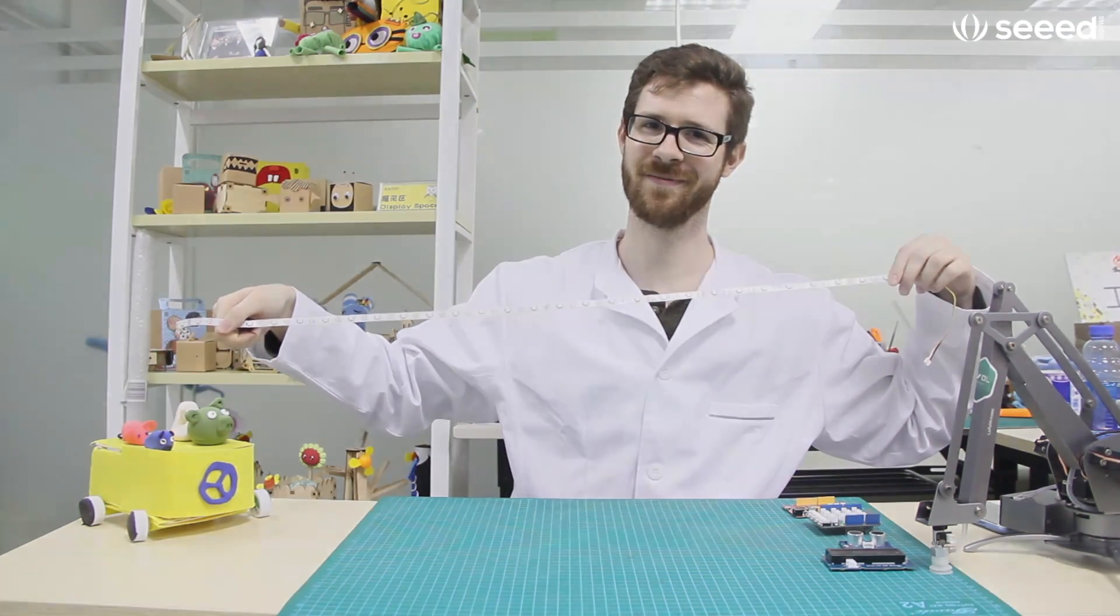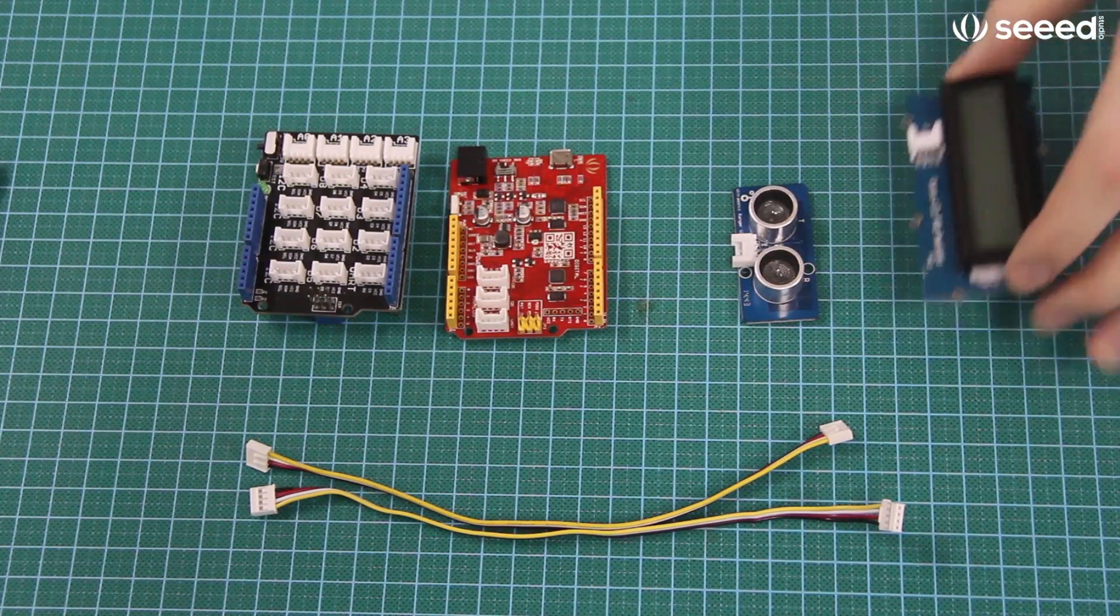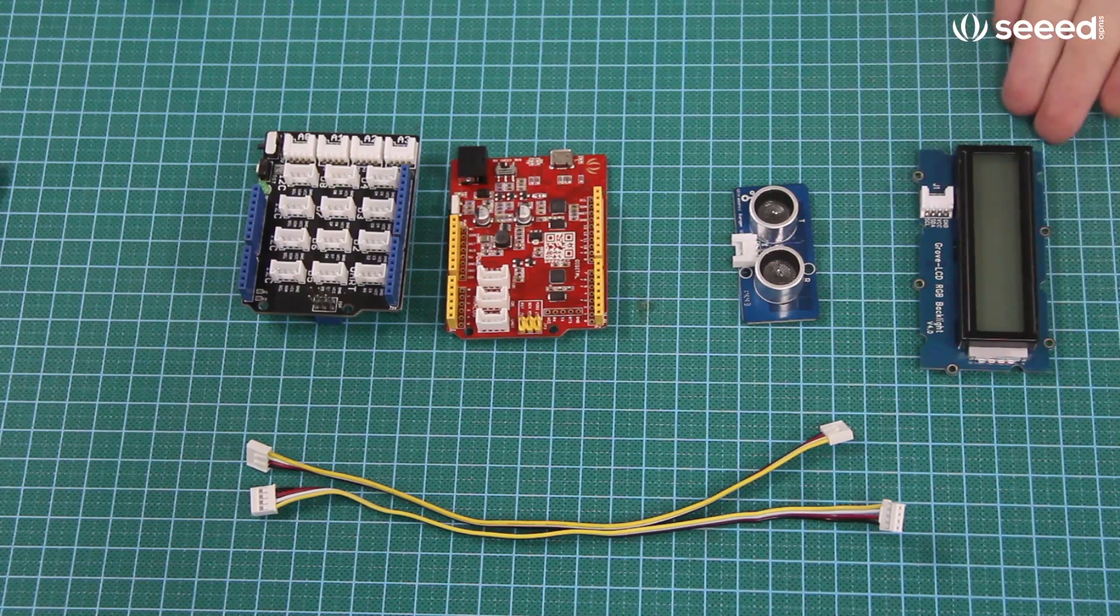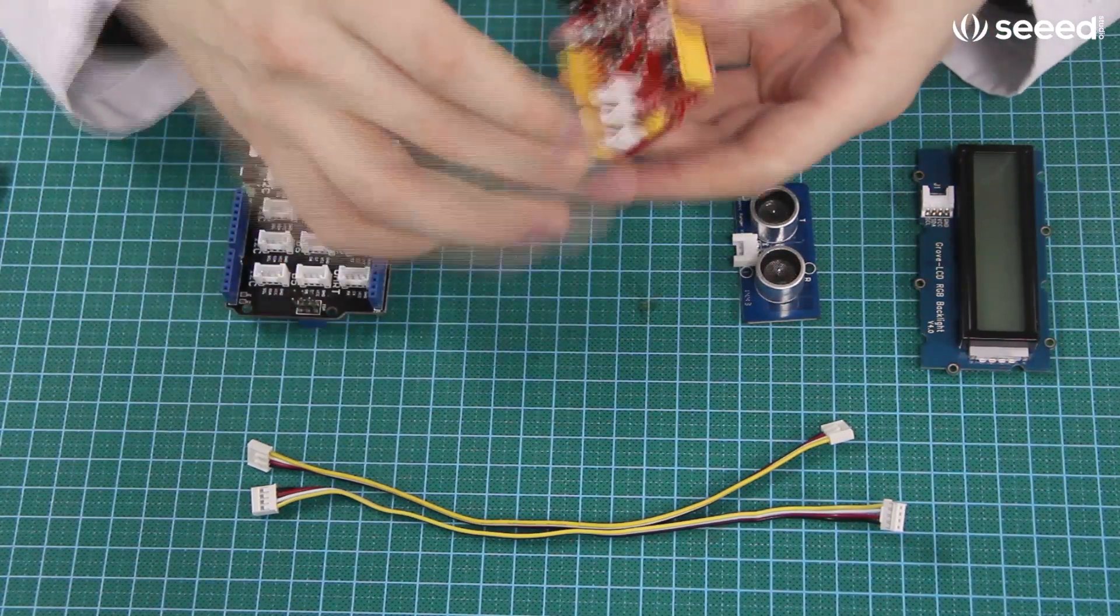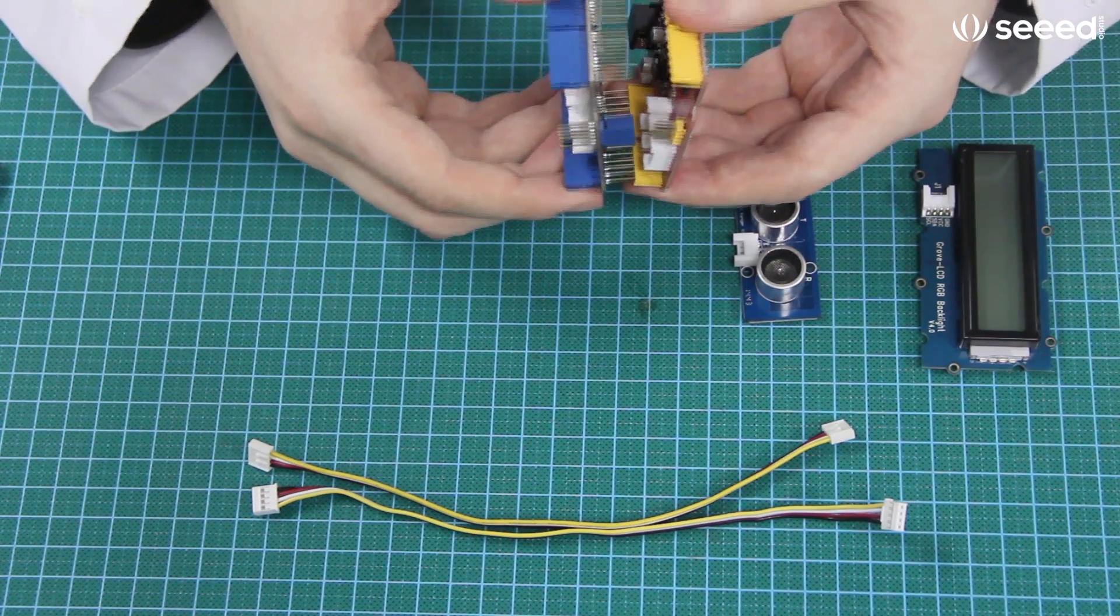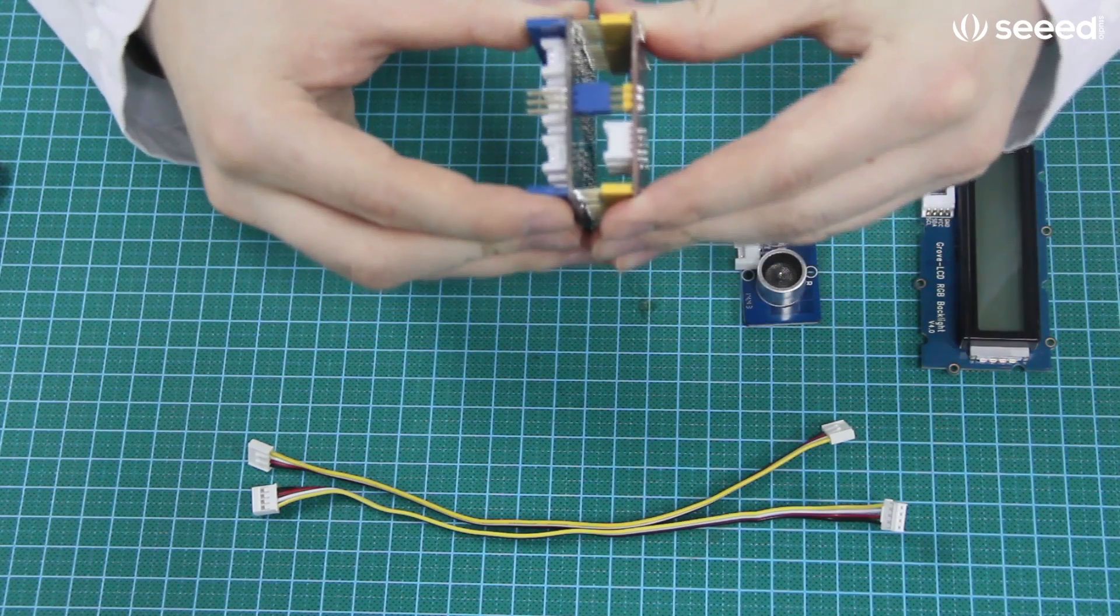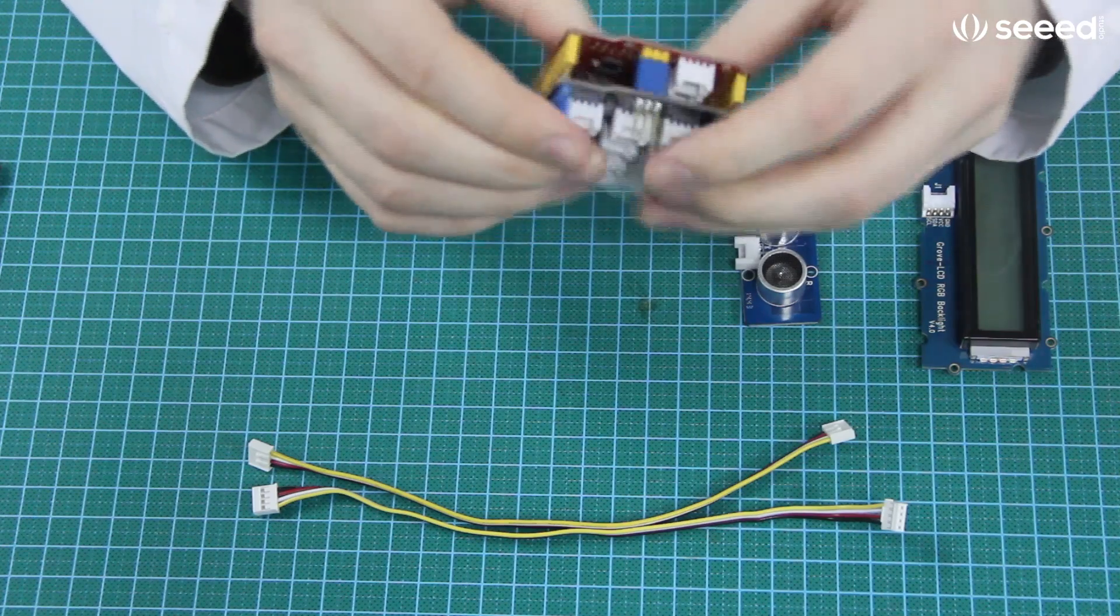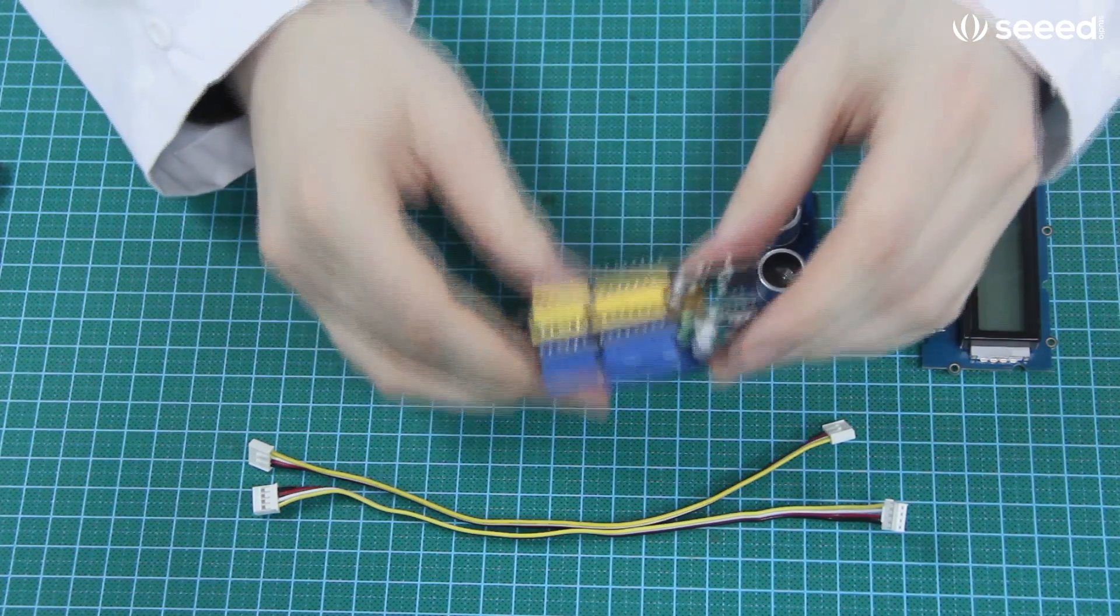Let's get started. So let's start with the Grove LCD RGB backlight, but before we even touch that we should plug in our base shield into our Seeeduino. Line up the pins on one side and before you push them in line up the pins on the other side, and then you can waddle back and forth squeezing each side slightly and it will go in. It'll be a nice and snug fit.